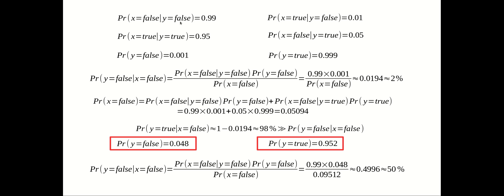The probability that the person is actually lying and the polygraph detects that is 0.99. And if the person is actually truthful and the polygraph says the person is not lying, that probability is 0.95. So compared with the previous medical test example, the two numbers here are different: one is 0.99 and the other is 0.95.